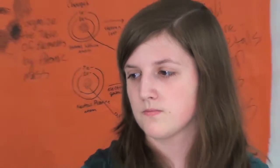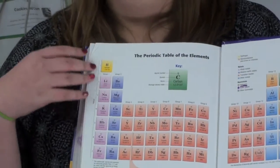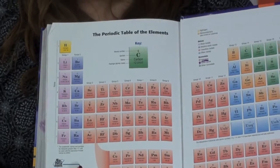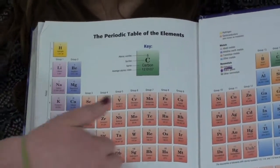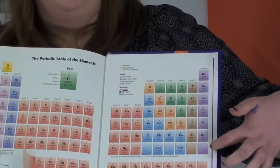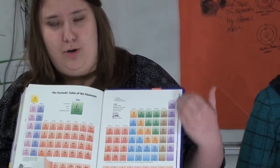And now for Section 3, which is literally just talking about the families. The first one is alkali, and then the next one is alkaline earth metals. And then transition. And then metalloids, which is by the staircase. And then halogens, and then noble gases. And noble gases are stable.